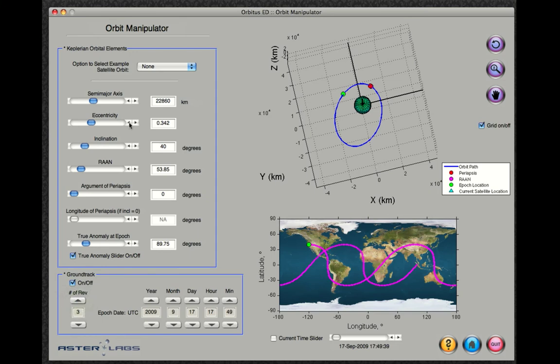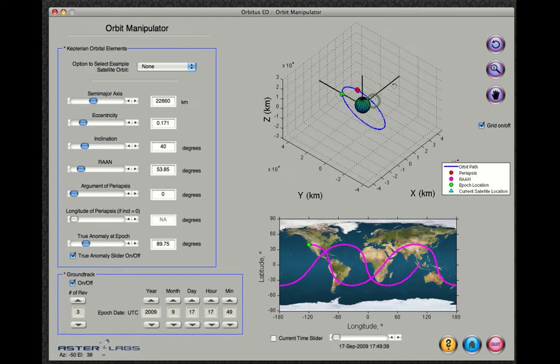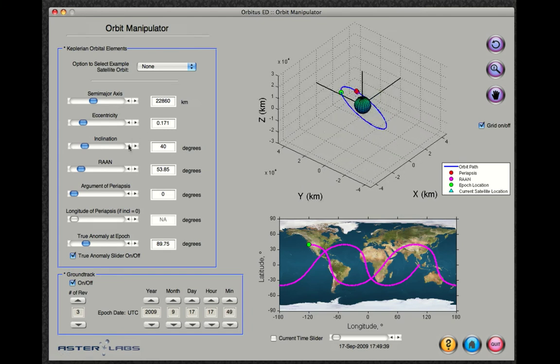These slide bars are tied to not only the three-dimensional orbit, but also the satellite's ground track image. As you can see, both of them are changing in real time.